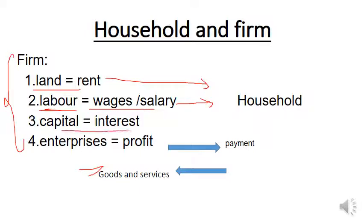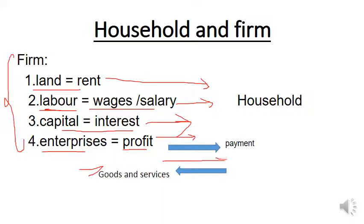Third is capital. The return on capital is investment or interest, which is payment to the household. And last is enterprise — entrepreneurs receive profit as their payment for all their contribution.